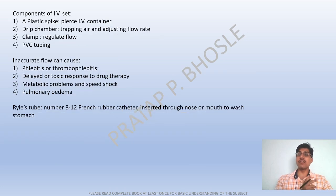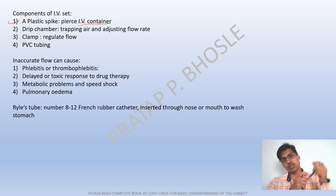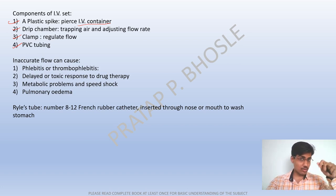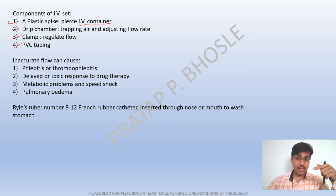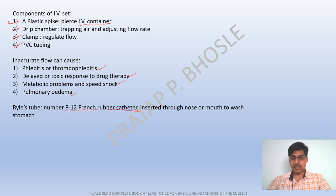The IV set components include a plastic spike to pierce the IV container, a drip chamber, clamp, and PVC tubing. Inaccurate flow can cause phlebitis, thrombophlebitis, dilution toxic response to drug, metabolic problems, and pulmonary edema. Ryle's tube is size 8-12 French rubber catheter.